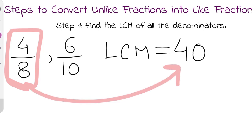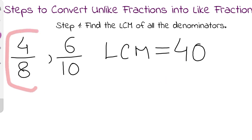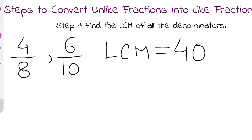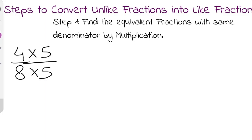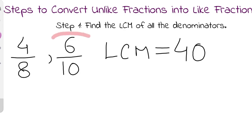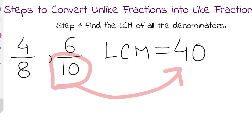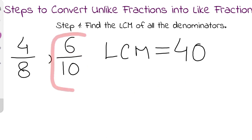We multiply both the numerator and denominator of 4/8 by 5, giving us 20/40. Now for 6/10: the denominator is 10, and to make 10 into 40 we multiply by 4. So we multiply both the numerator and denominator of 6/10 by 4.